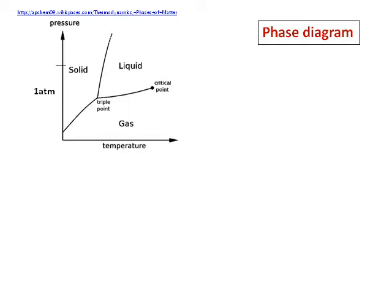The phase diagram is graphed between pressure and temperature. I have written the pressure in terms of atmospheres and temperature in degrees Celsius. You can see that it has three distinct parts: solid, liquid, and gas. There are also two important points — the critical point, where the distinction between liquid, gas, or solid doesn't exist, and the triple point, where all three states — solid, liquid, and gas — exist in equilibrium.